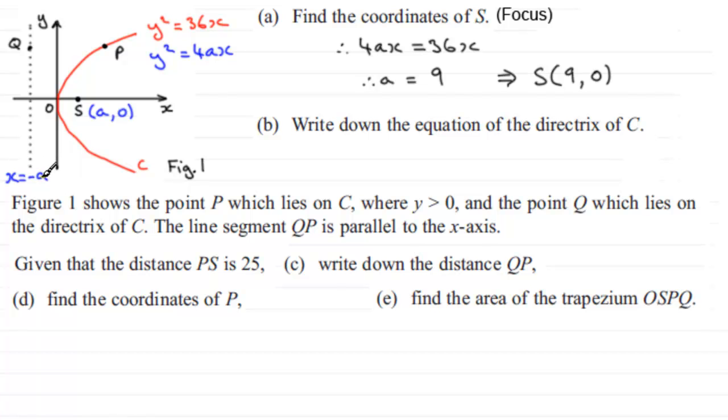Now, we've already found out what a is. It was 9. So therefore, we can write down the equation of the directrix. It's going to be x = -a, or in this case, -9.